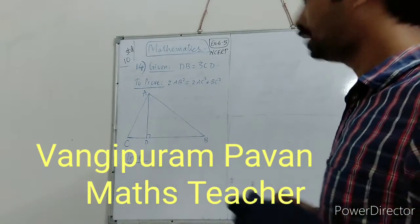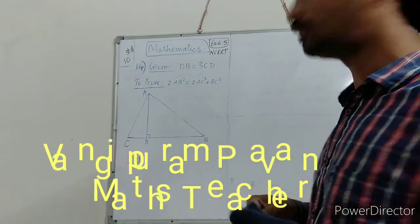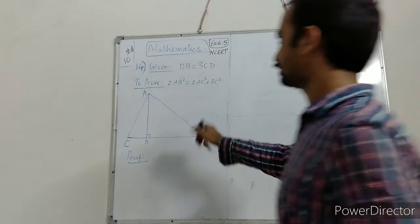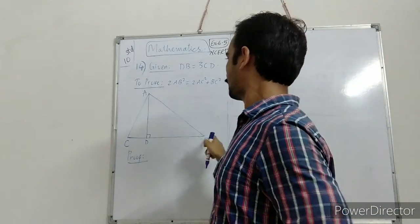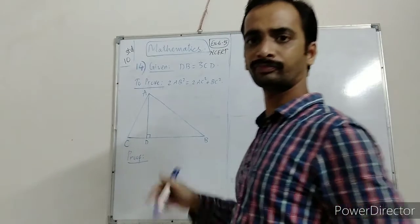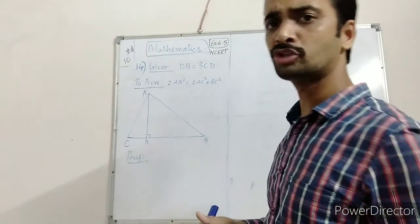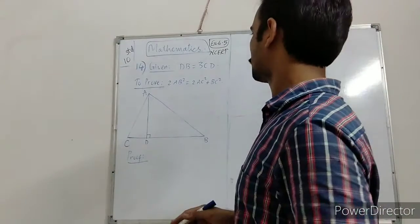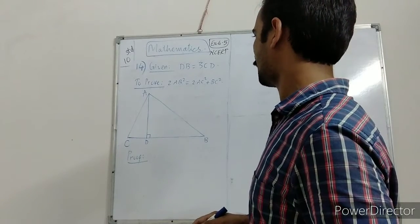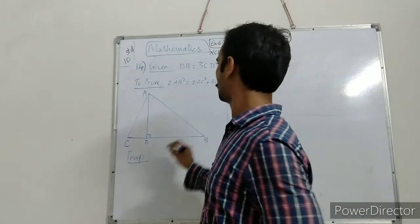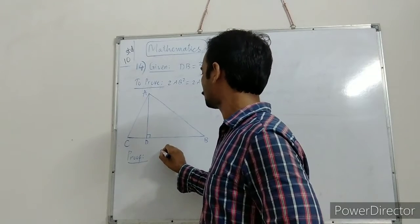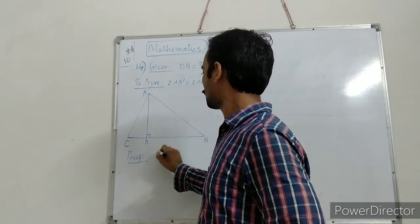Given that bd is equal to 3cd, and we have to prove that 2ab square is equal to 2ac square plus bc square. First of all, we need to make a relation between ab square and ac square, and then we can get this result.